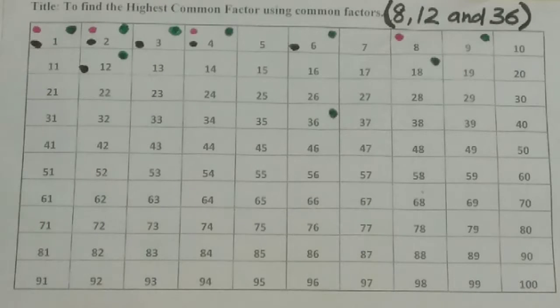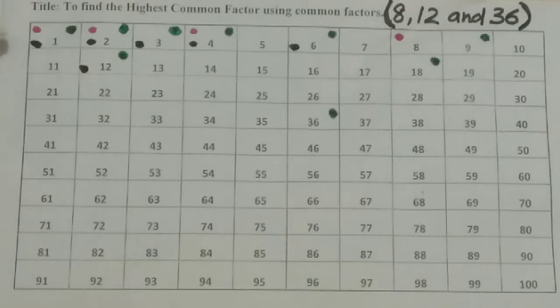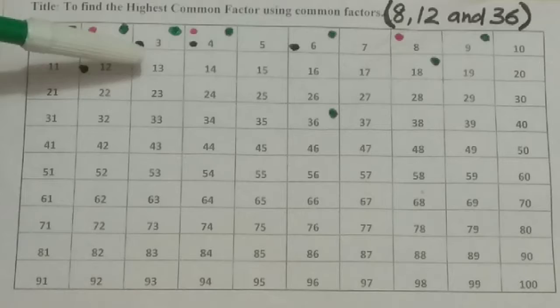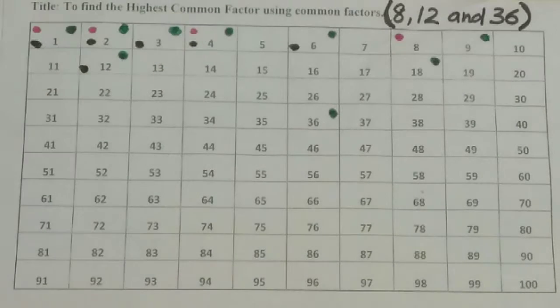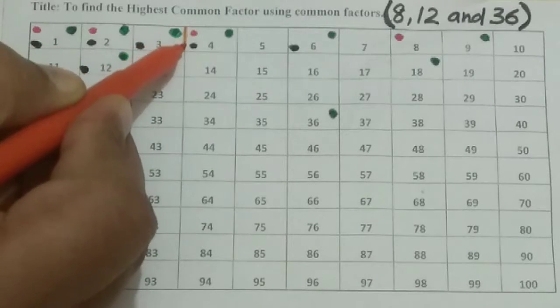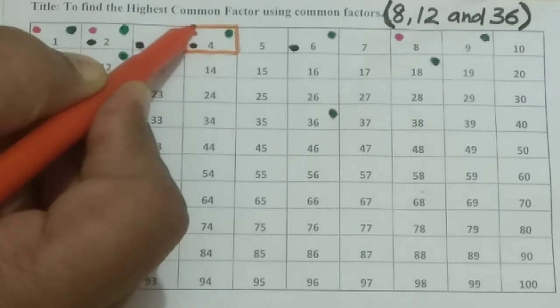Now look at here. When I have to find the HCF, with the help of this 8, 12 and 36, anything in common where all three lines or three points are there. So 1, this is 1. 2 yes. 3 no. 4, so 4 is the answer, we can say 4 is the answer.